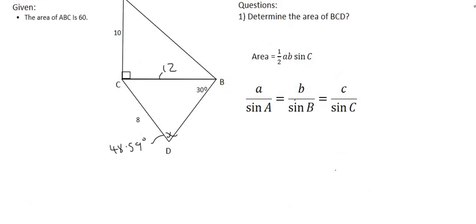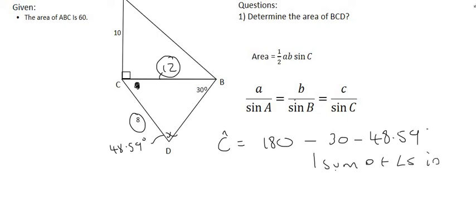The two sides that we have in this bottom triangle is this one and this one. So to use the area rule, you need two sides and you need the angle in between. So we would need this angle over here. But that's easy now because we already have the other two angles. So we could say that angle C is equal to 180 minus 30 minus 48.59. And the reason for that is the sum of angles in a triangle. And so angle C would be equal to 101.41 degrees.